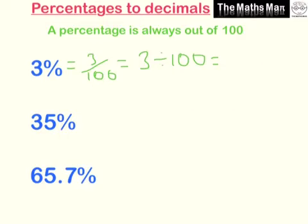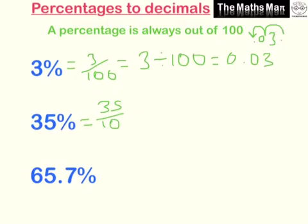To do 3 divided by 100, we take the number 3, then move the decimal point back once and twice, so our answer is 0.03. That's the decimal for 3%.